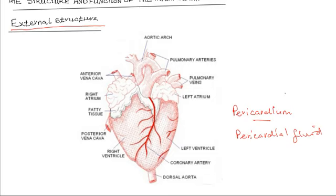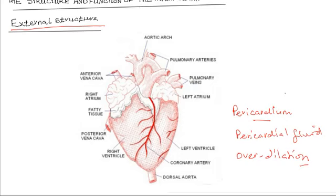The pericardial membrane also helps to keep the heart in position and checks on over-dilation, preventing the heart from stretching too much. On the outer part of the membrane, there is fatty tissue which acts as a shock absorber.